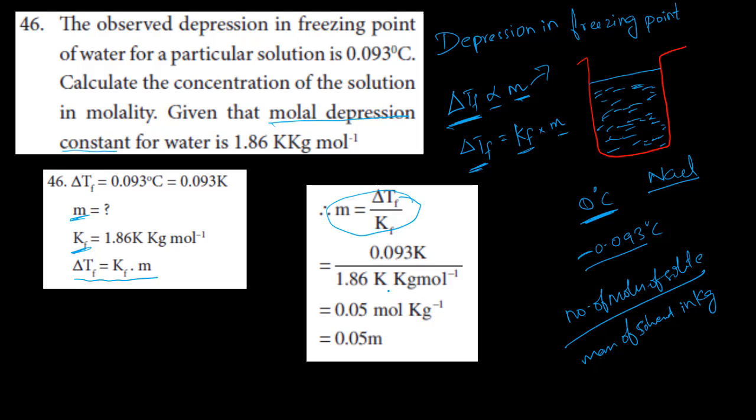So 0.093 Kelvin divided by 1.86. If I call it, you see, 0.073 Kelvin is equal to 0.093 Kelvin. So 0.093 Kelvin is equal to 0.093 Kelvin. Convert.